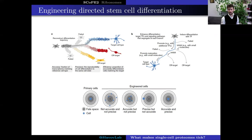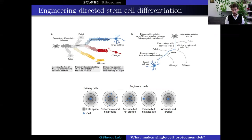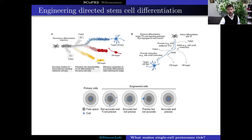If we could make single-cell measurements to identify what signaling mechanisms result in those different branches, we could use a more rational approach to either stimulate or inhibit different signaling pathways so that we can more efficiently generate the targeted cell type of interest. Furthermore, we can use those single-cell measurements to estimate how accurate and precise the differentiation protocol is.